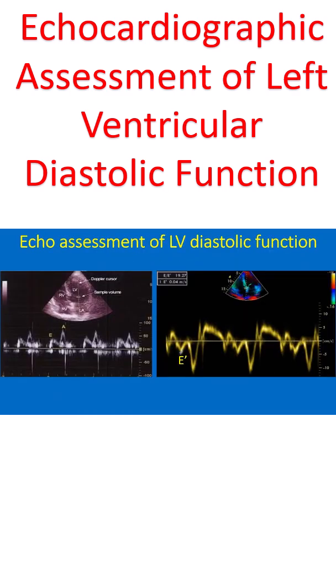Though there are several parameters for evaluation of left ventricular diastolic function by echocardiography, the most commonly used are the Pulsed Doppler Mitral E/A ratio and Tissue Doppler Mitral E/E prime ratio.